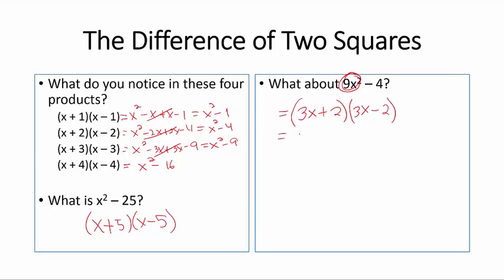So let us check. This is 9x squared minus 6x plus 6x minus 4. Do those two collapse? Yes. Indeed, that is what we are looking for. And in general,